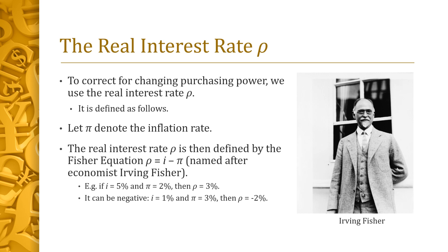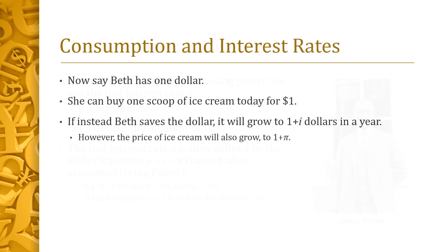For instance, if the nominal interest rate i is 5% and inflation pi is 2%, then the real interest rate rho is 5 minus 2, or 3%. The real interest rate can be negative. For instance, if the nominal interest rate i is 1% and inflation pi is 3%, the real interest rate rho is minus 2%.